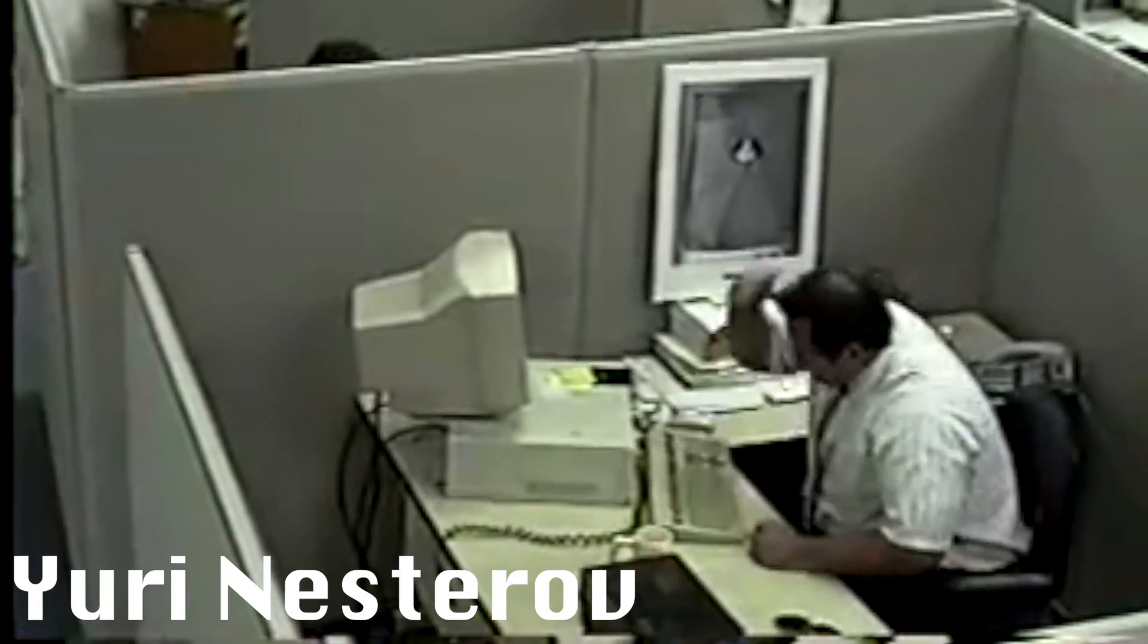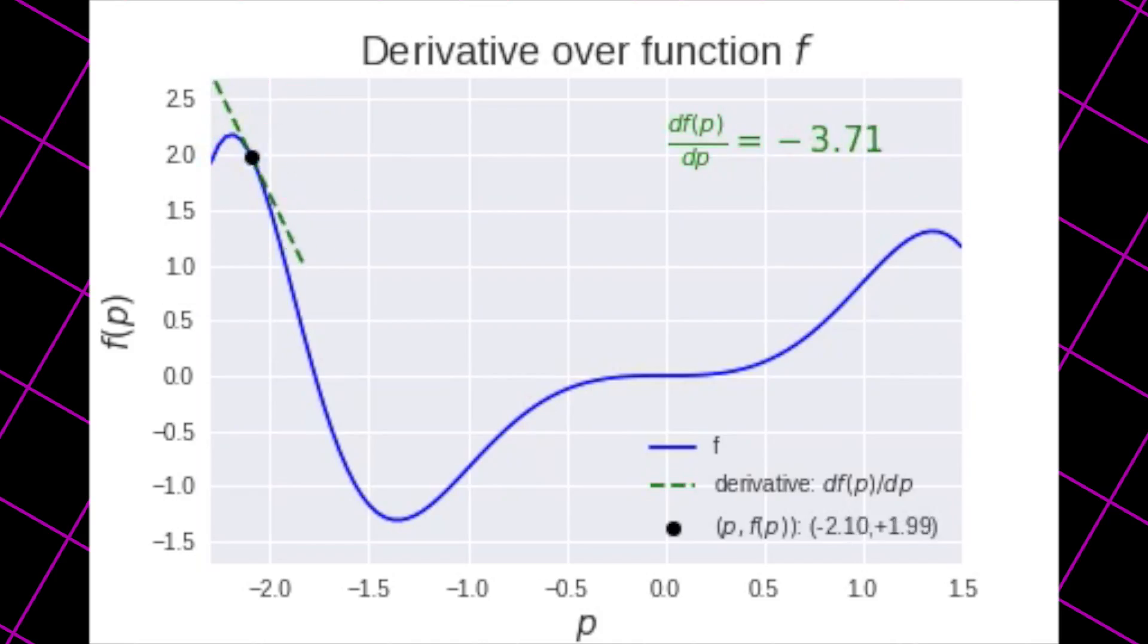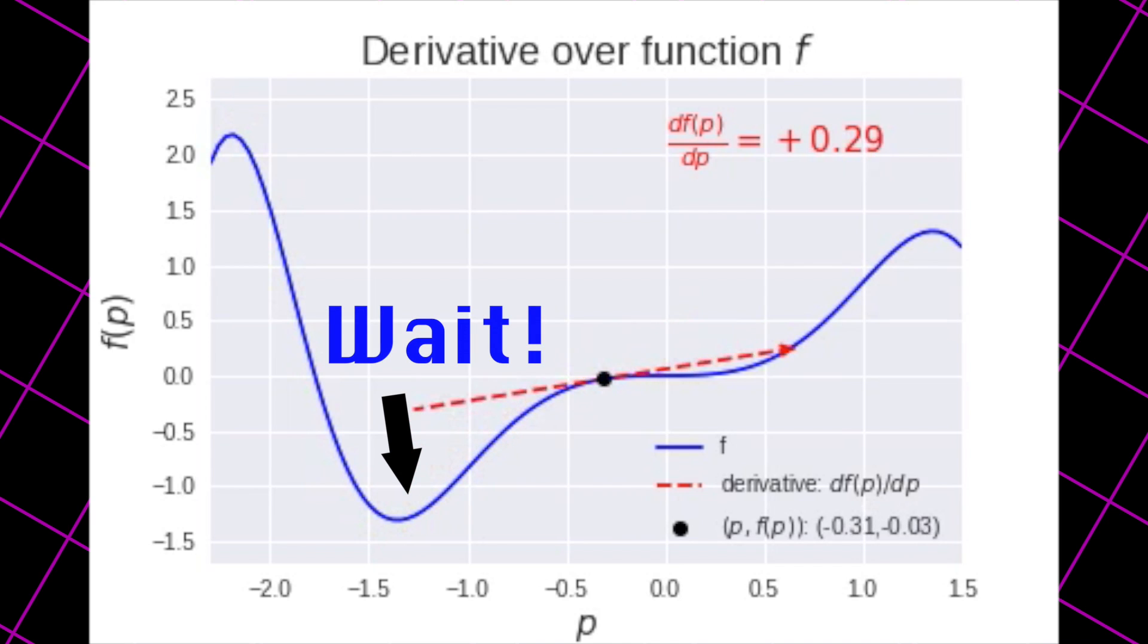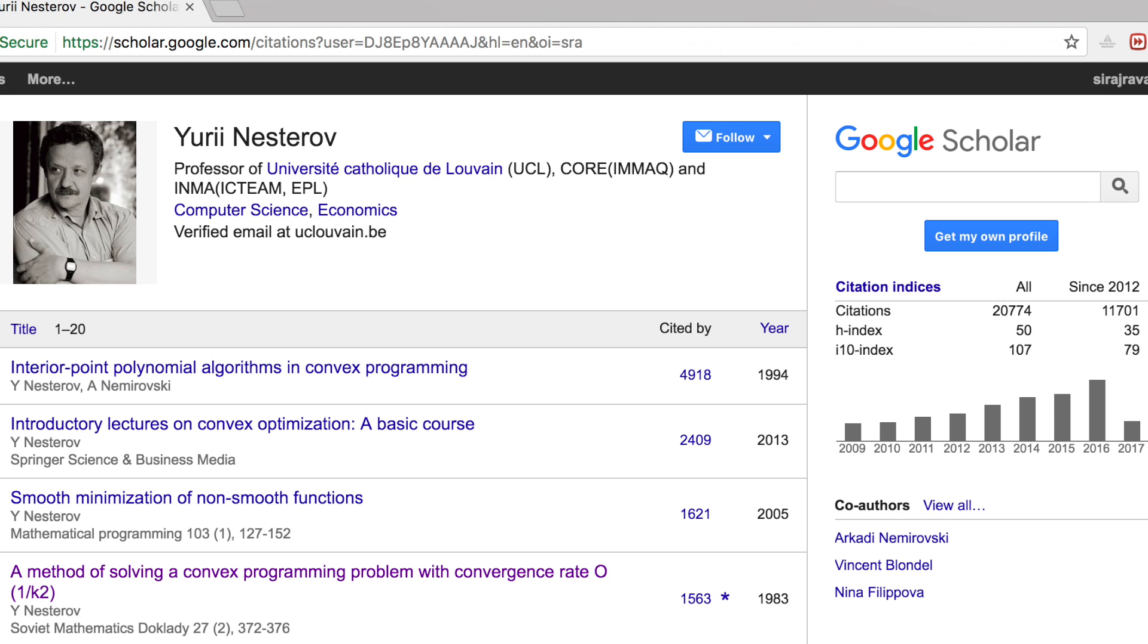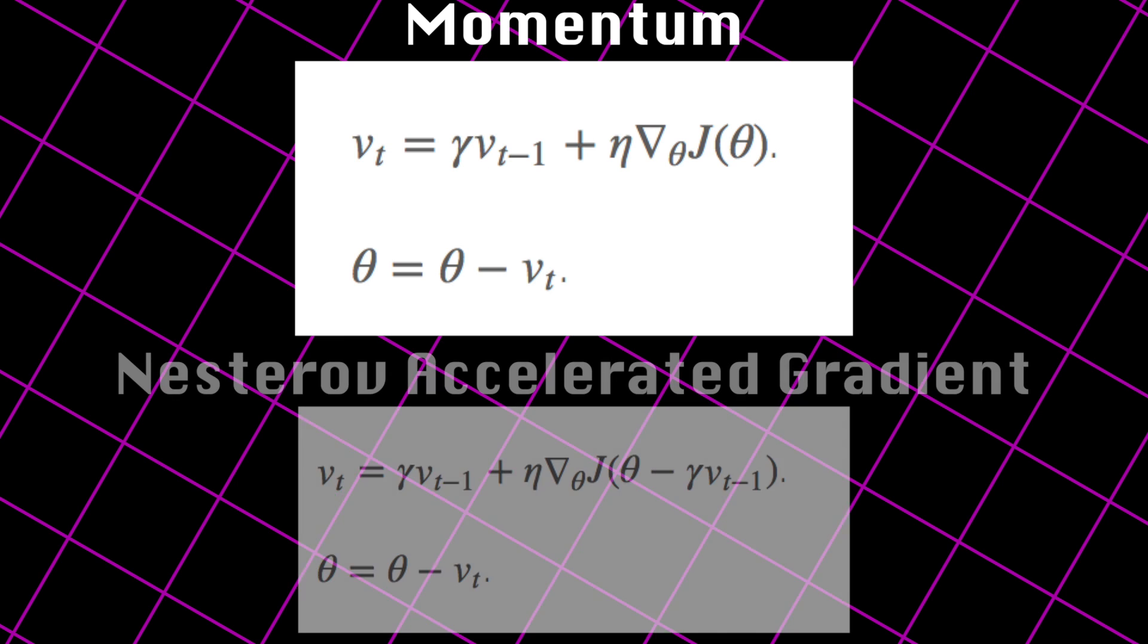But a researcher named Yuri Nesterov saw a problem with momentum. Once we get close to our goal point, the momentum is usually pretty high, and it doesn't know that it should slow down, which could cause it to miss the minima entirely. He solved this problem in a paper he released in 1983, and we now call this strategy the Nesterov accelerated gradient. In the momentum method, we compute the gradient, then make a jump in that direction amplified by the previous momentum.